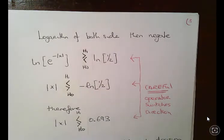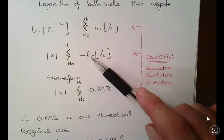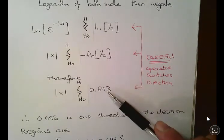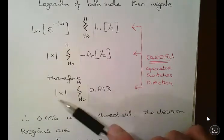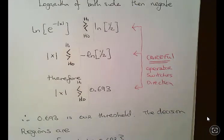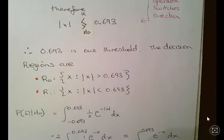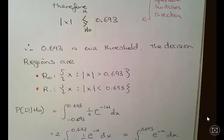So the absolute value of x compared to minus log of a half. Calculate that out: the absolute value of x compared to 0.693, so 0.693 is our threshold and those are our decision regions.